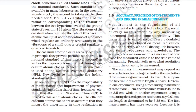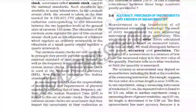The cesium atomic clocks are very accurate in principle and they provide a portable standard. The national standard of time interval — the second — as well as frequency, is maintained through four cesium atomic clocks. A cesium atomic clock is used at the National Physical Laboratory (NPL), New Delhi, to maintain the Indian standard of time.